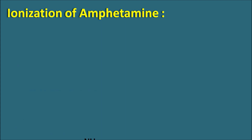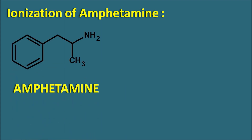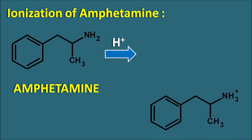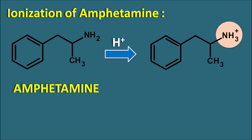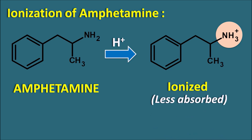Regarding ionization of amphetamine: the structure contains a primary amine. In an acidic environment, protons can attack this amine, converting amphetamine to an ionized form with an NH3+ group. When ionized, this drug is less absorbed through the GI tract. Conversely, in ionized form it is more soluble in aqueous environments and can be easily excreted in the urine. Thus, pH at the GI tract as well as at the renal tubules can influence the bioavailability of amphetamine.